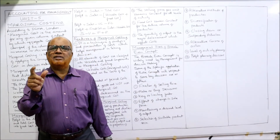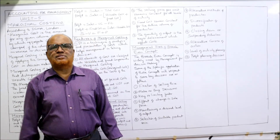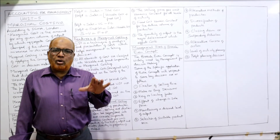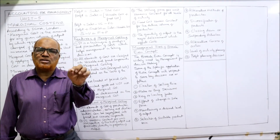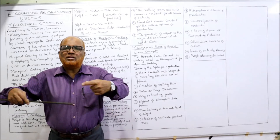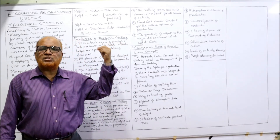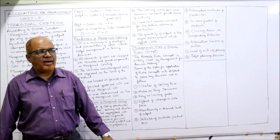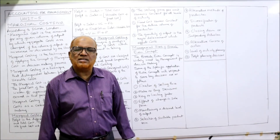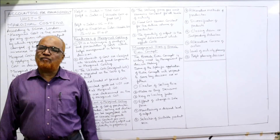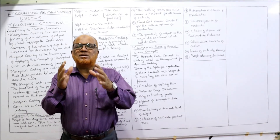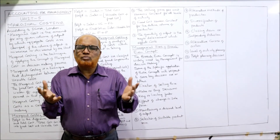The tenth application is evaluation of alternative courses of action. Decision making means choosing from alternatives, and marginal costing is a handy tool for evaluating those alternatives. The eleventh application is level of activity planning — deciding at what level of activity the business should operate. Lastly, profit planning: CVP analysis is a profit planning technique used by management to plan desired profit levels.